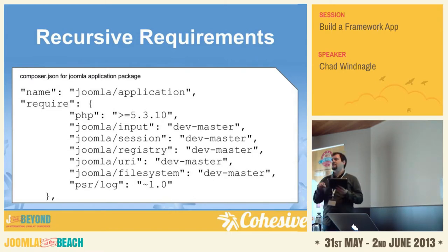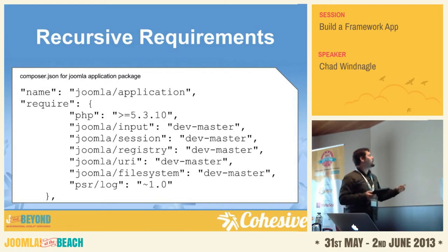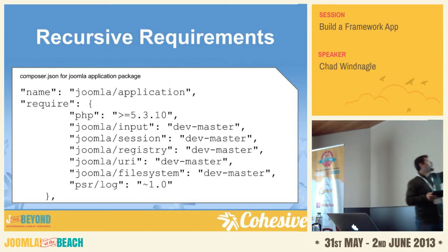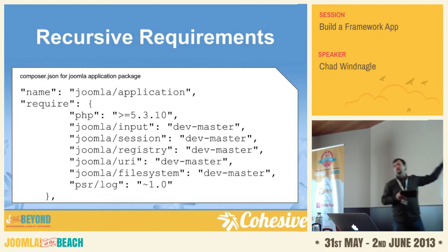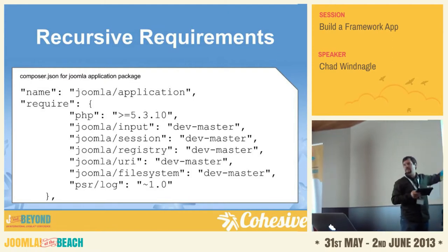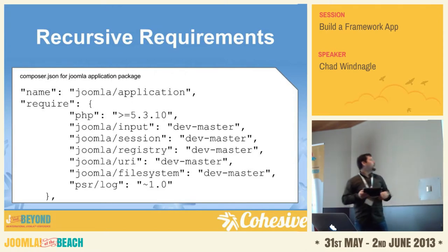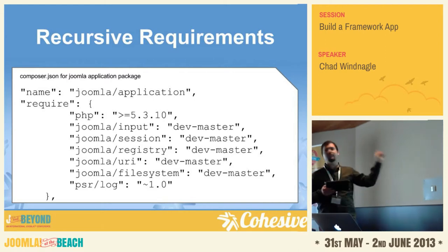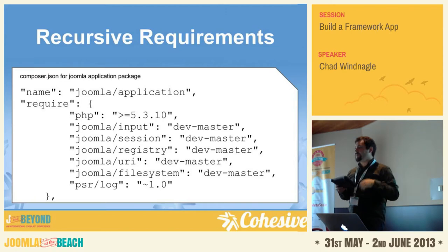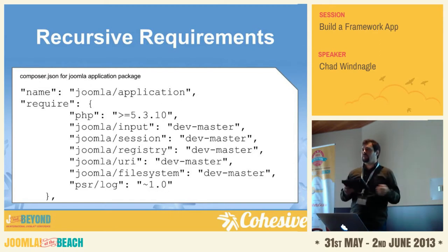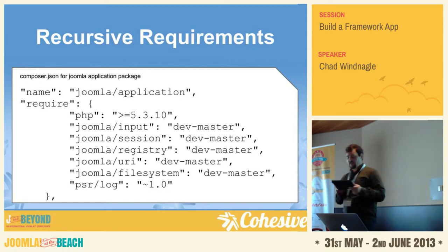So we have recursive dependency management. It's not just getting the Joomla application and then finding that the application actually requires a few other things. Composer will automatically look at the Joomla application require statements and see that it has a few other dependencies and go get all of them for us. If any of those have dependencies, Composer will automatically go get all of those as well. So by saying I want one thing, we end up getting everything else we need to run. The bad thing is right now we have more dependencies than we need, so we're trying to get rid of as many as we can to keep things as light as possible.